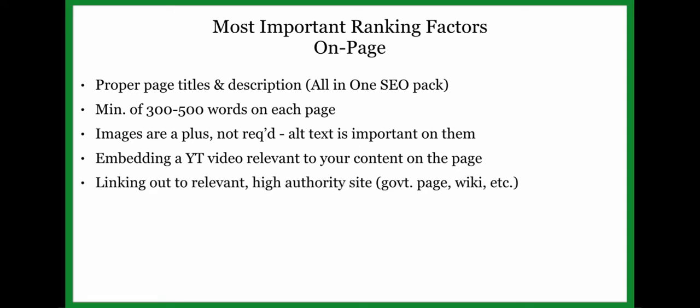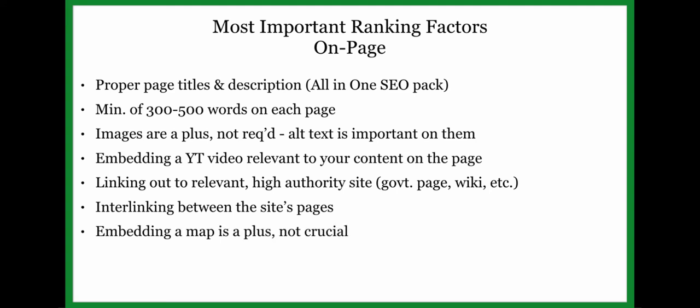For whatever city we're targeting, we're going to link out to their government homepage — the city.gov, .us, or .org site — and also a Wikipedia page for the topic, such as lawn care, landscaping, or snow plowing. We're also going to be interlinking between pages on our site, which we've already started doing with our contact page. Finally, we'll be embedding a Google Map into our page — it sounds complex but it's not that hard; I'll show you exactly how.